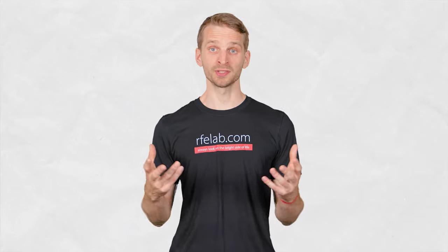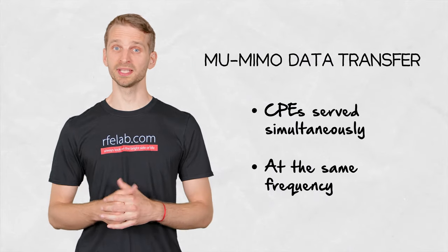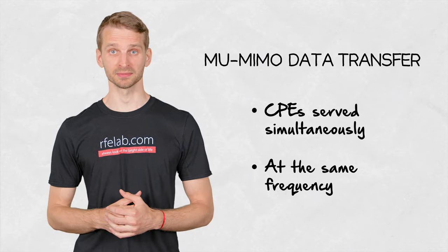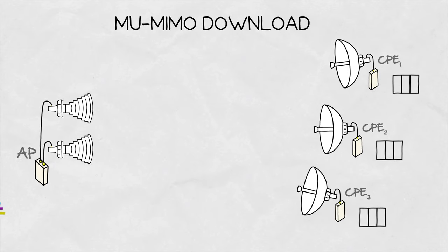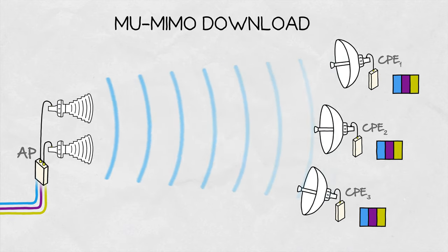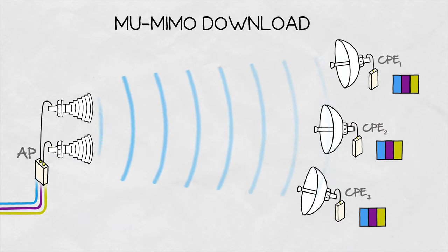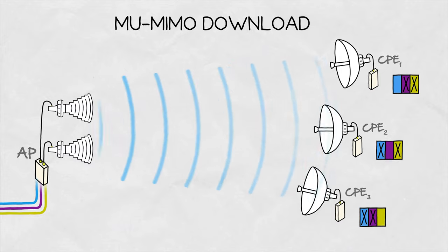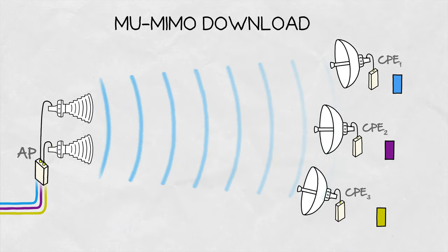It is important to understand that the transmission of the signals to all CPEs happens at the same time and at the same frequency channel. During the download, each CPE receives all the signals containing all the data streams involved. Thanks to the signal processing techniques and the knowledge of the propagation channel characteristics between the access point and the client station, each of them can pick the data stream that is meant for them.